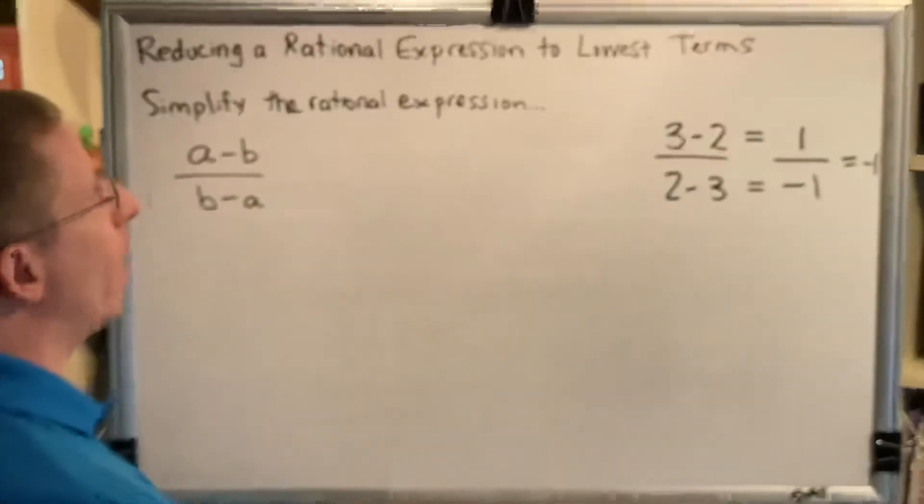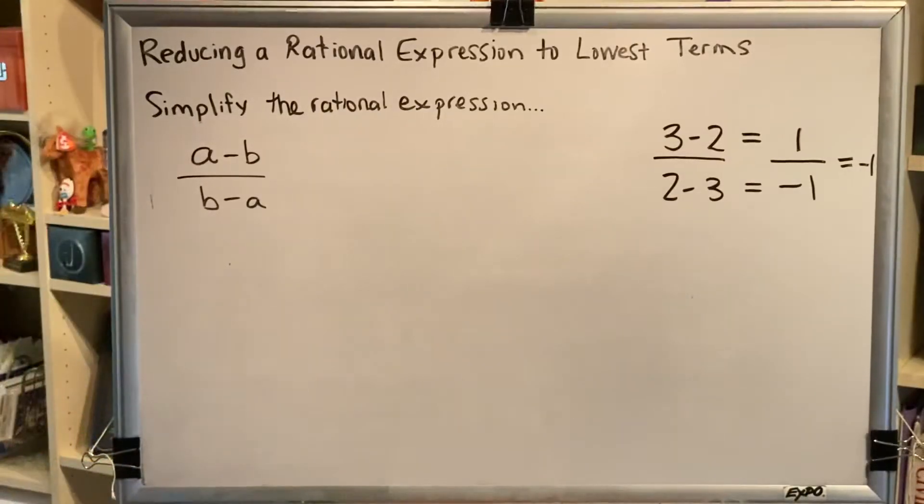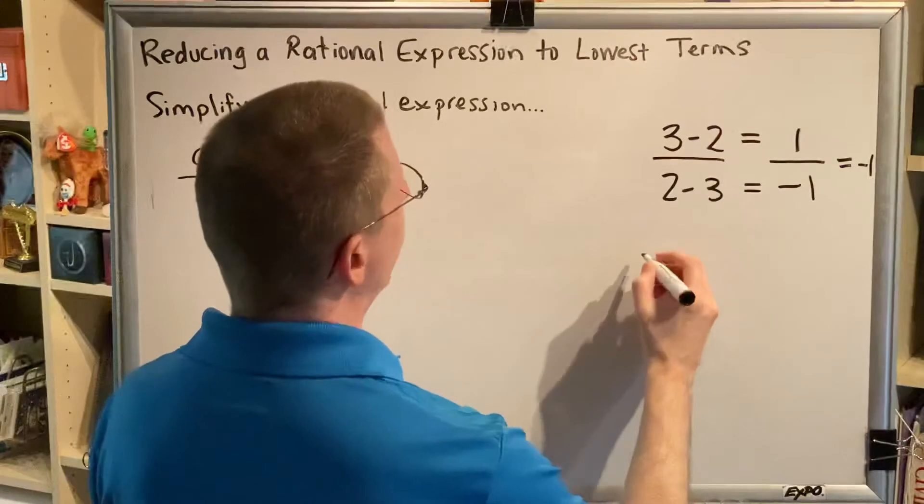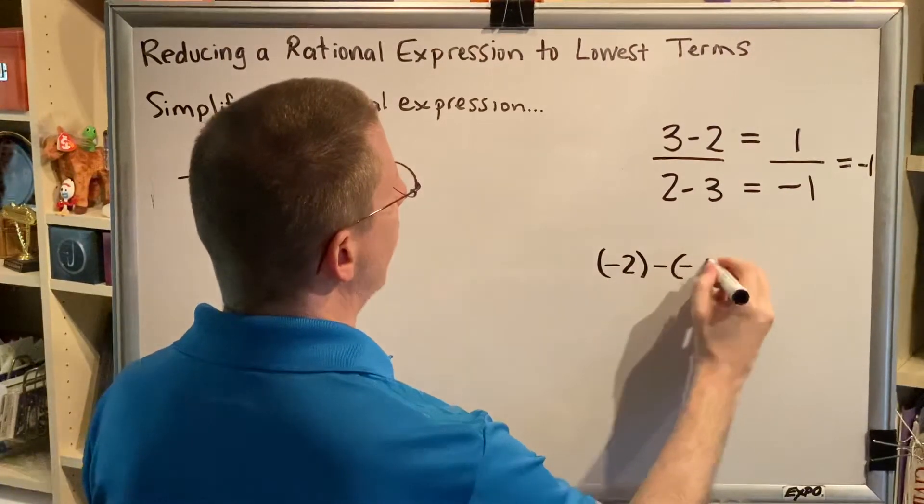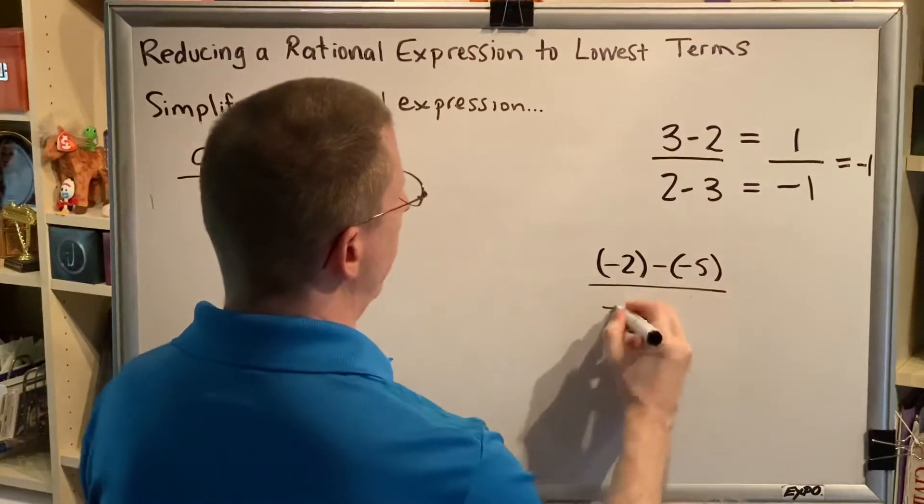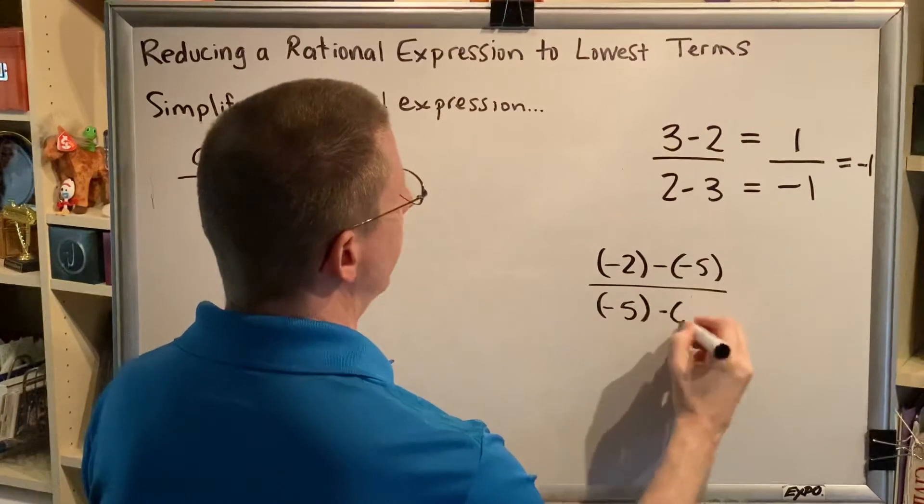This will always be true for any pair of real numbers that we pick, as long as the real numbers are different. So for example, let's say we had negative 2 minus negative 5 over negative 5 minus negative 2.